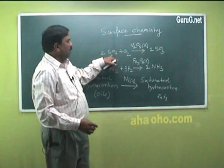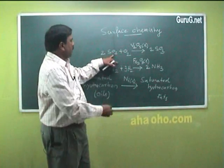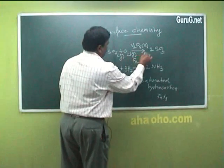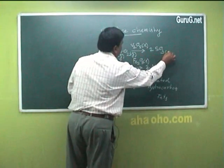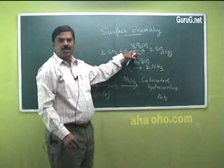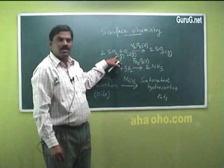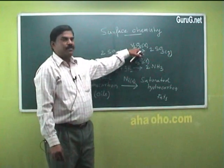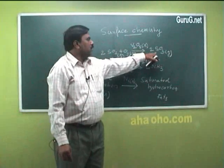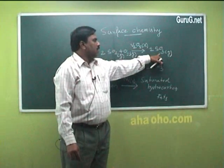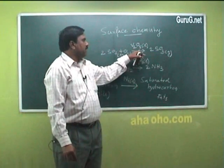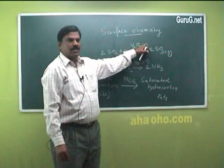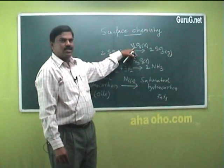For example, sulphur dioxide gas and oxygen gas are both adsorbed on the solid surface V2O5, and the solid gives the product SO3 gas. So, the reactions take place on the surface of the V2O5 solid — that is why it is called a surface reaction.